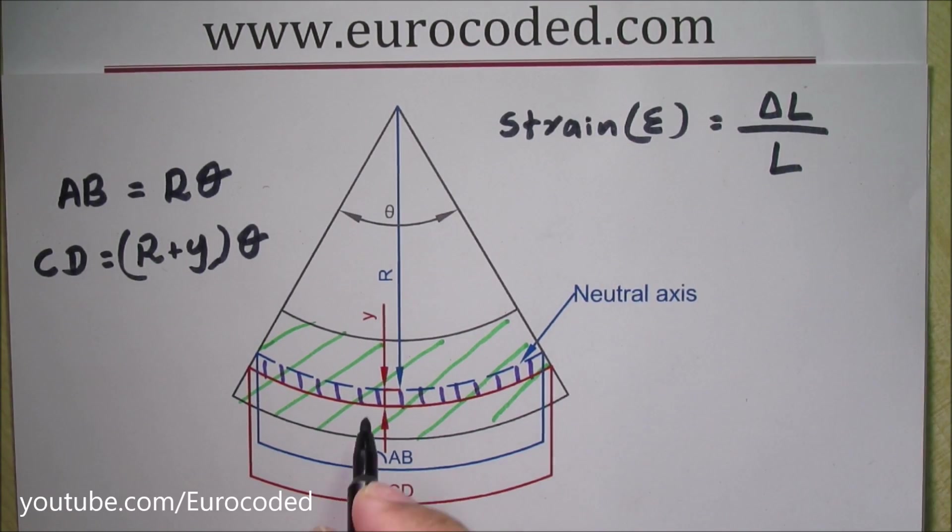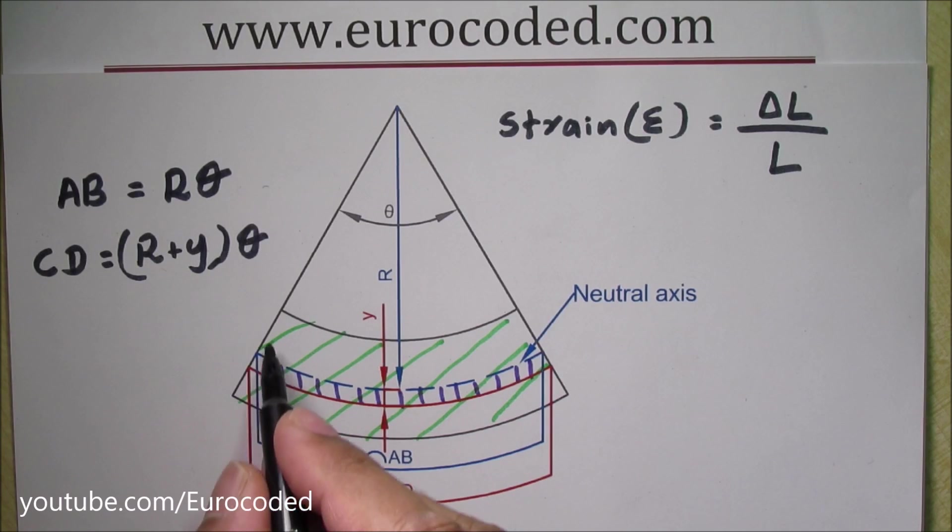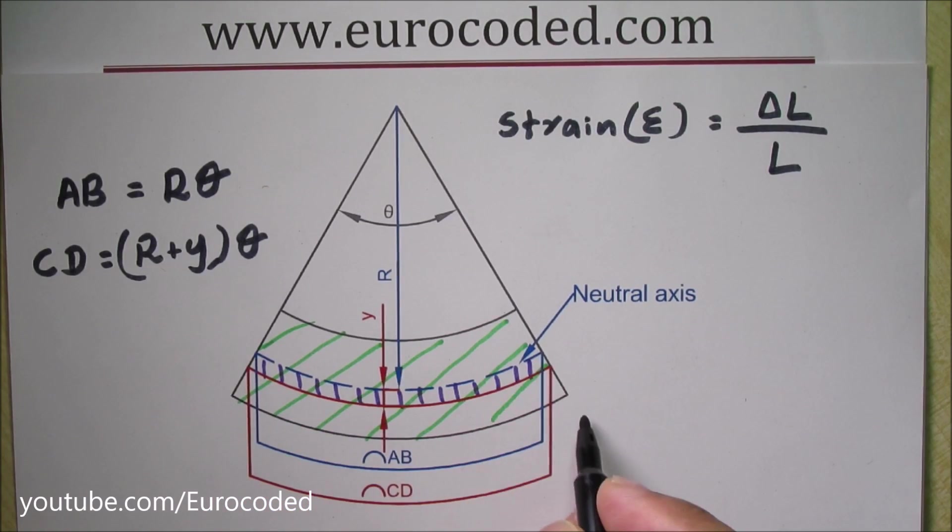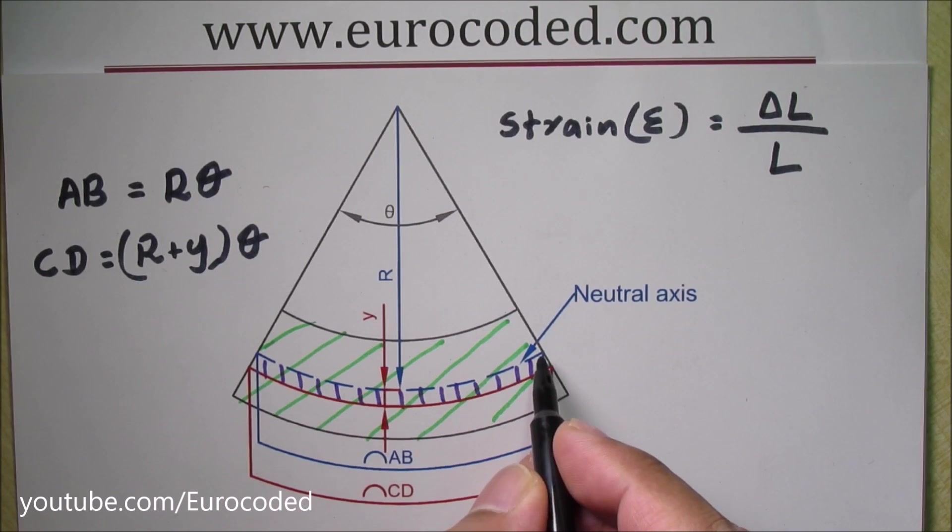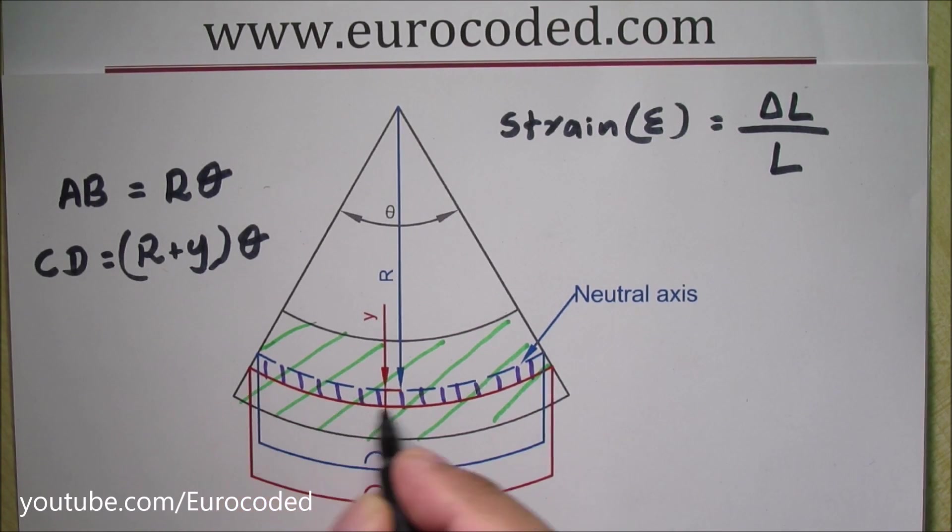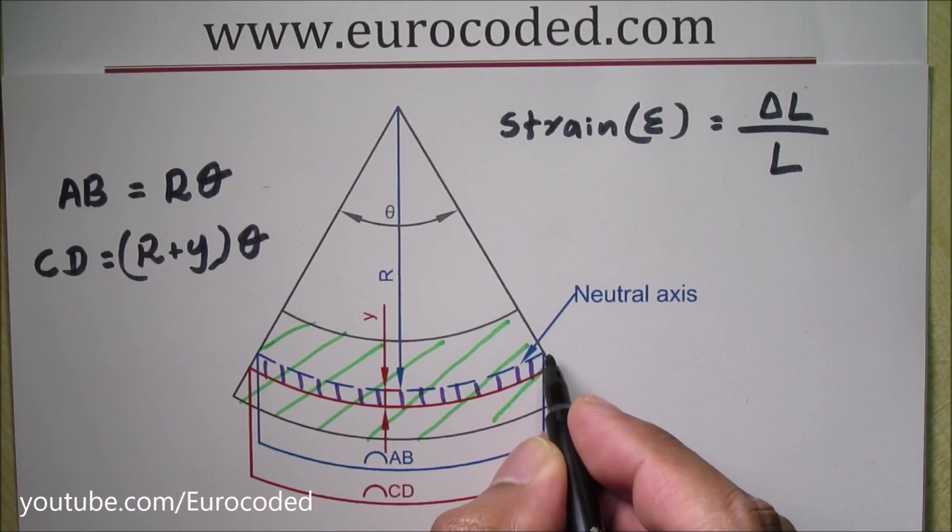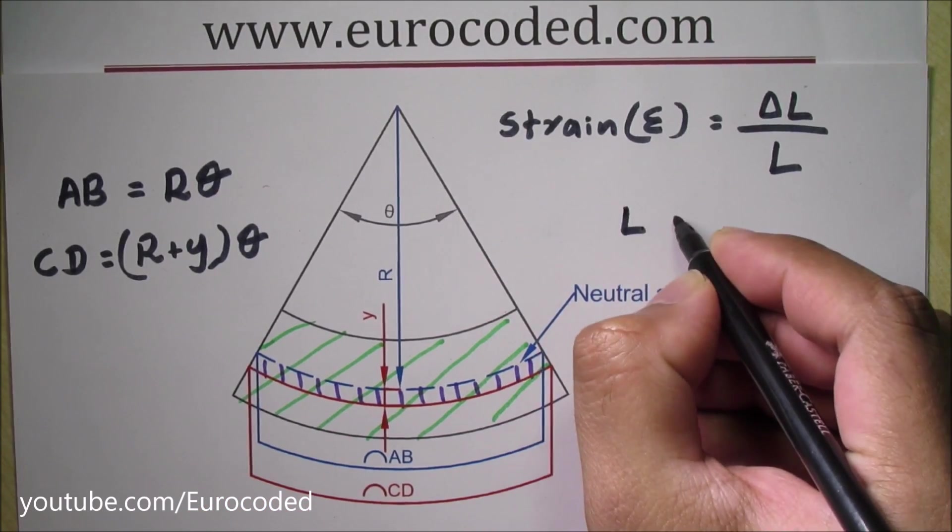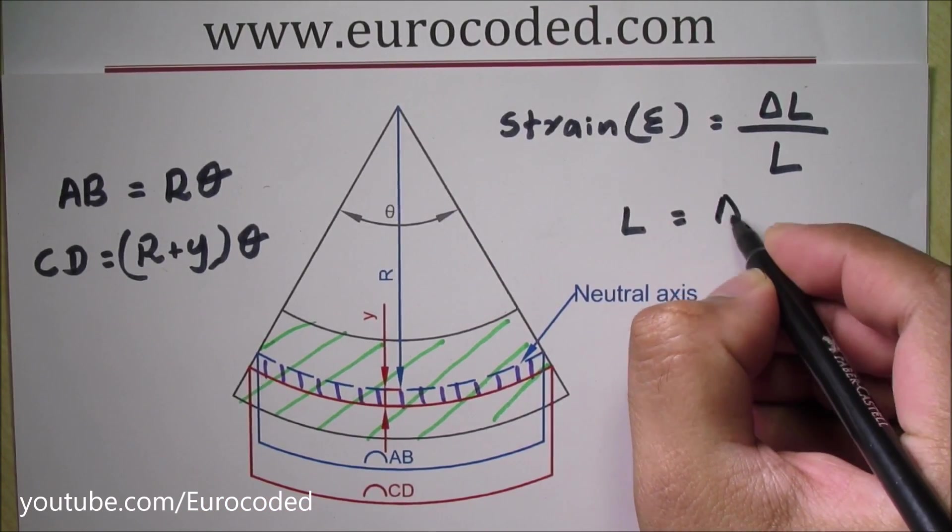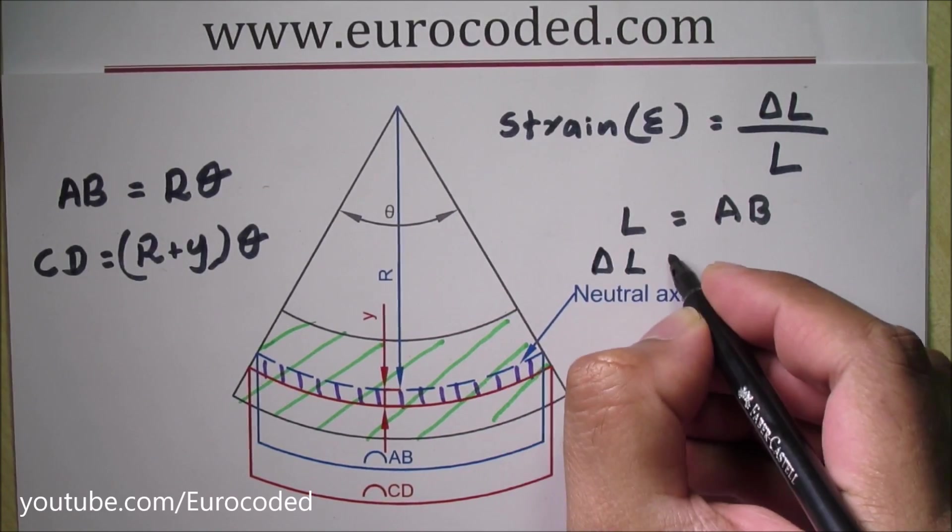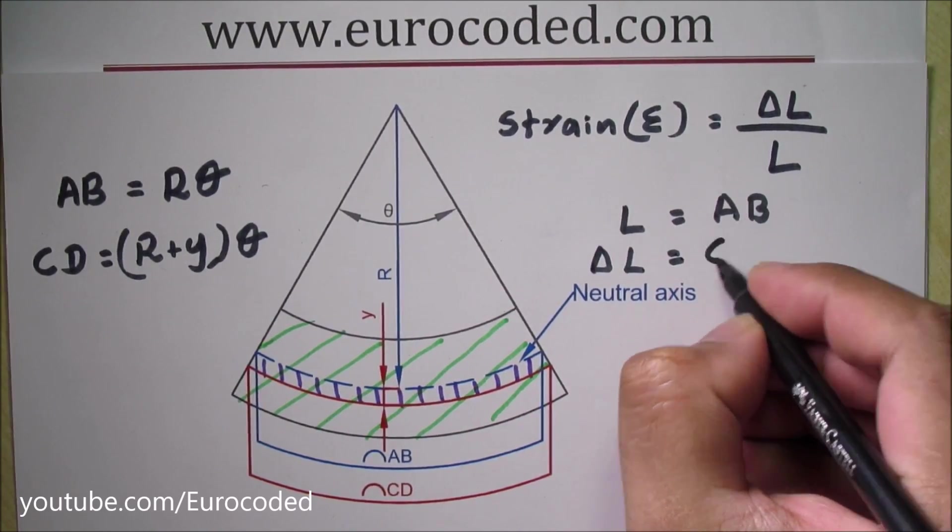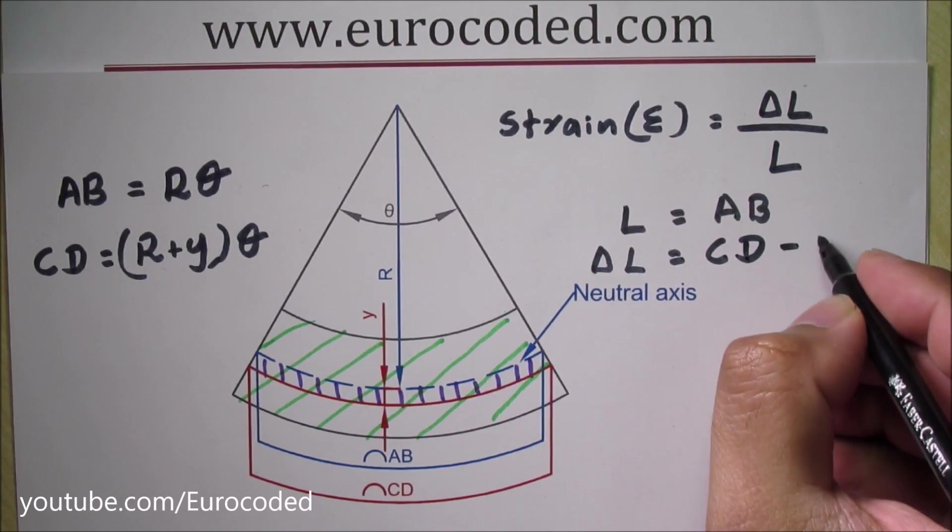Now we know that the original length of the small portion of our beam section is AB, and the change in length is CD minus AB. Original length we can write L is equal to AB, and change in length delta L is equal to CD minus AB.